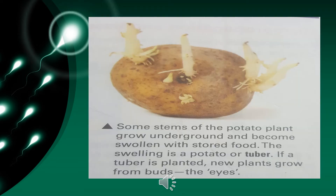In this slide you are viewing the potato plant. Some stems of the potato plant grow underground and become swollen with stored food. The swelling is a potato or tuber. If a tuber is planted, new plants grow from buds which are called the eyes.